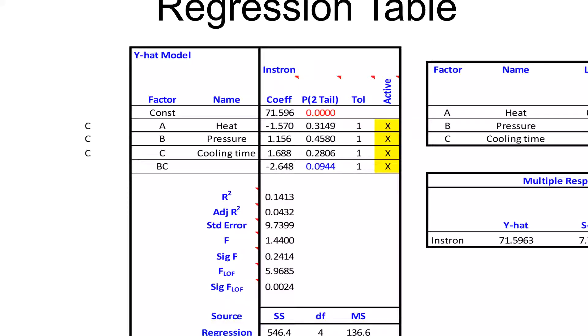That basically means that the three variables that they decided to play with had almost negligible effect on the result. In fact, the p-values here and the hypothesis tests are basically saying heat, pressure, cooling time - they don't have any effect on the result, none whatsoever. There's no link.